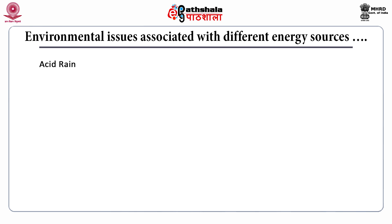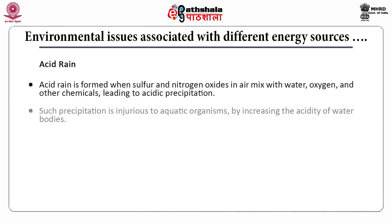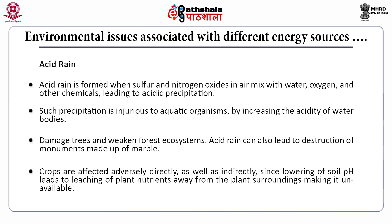Another issue related with energy consumption is acid rain. Acid rain is formed when sulfur and nitrogen oxides in air mix with water, oxygen and other chemicals, leading to acidic precipitation. Acid rain need not affect the polluted area but can be transported over long distances. Such precipitation is injurious to aquatic organisms by increasing the acidity of water bodies. It can damage trees and weaken forest ecosystems, lead to destruction of marble monuments, and adversely affect crops directly or indirectly, since lowering of soil pH leads to leaching of plant nutrients away from plant surroundings.